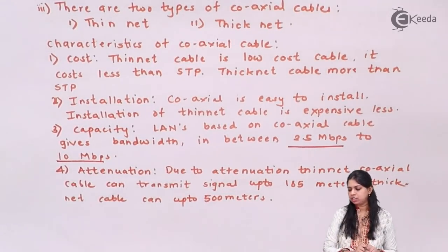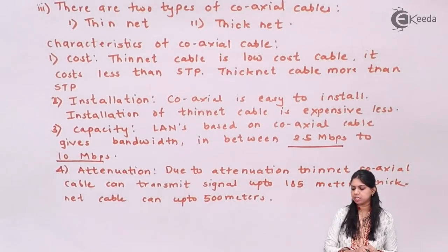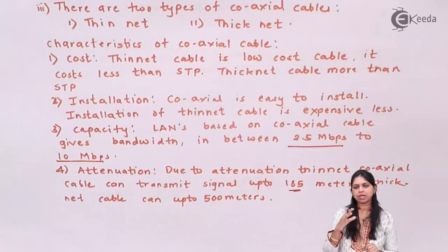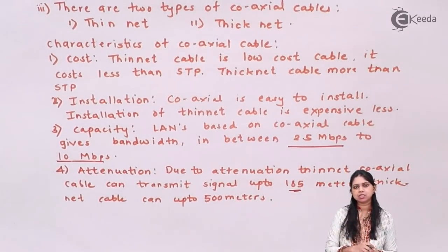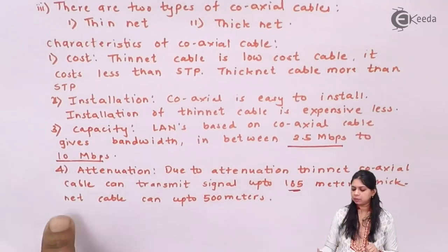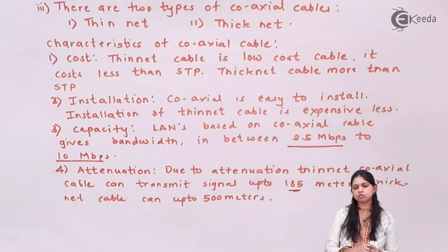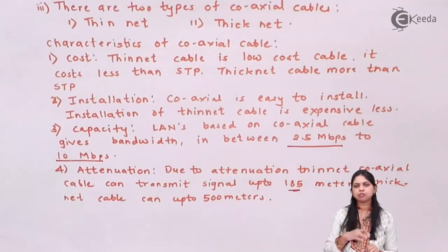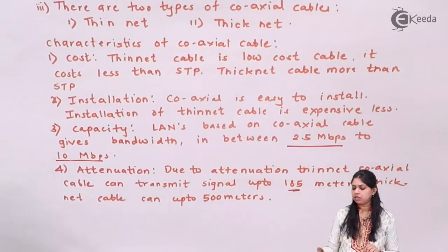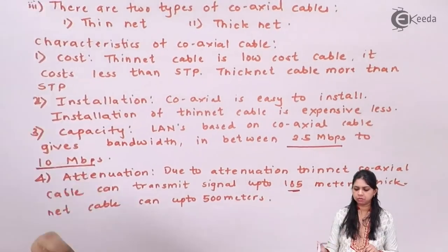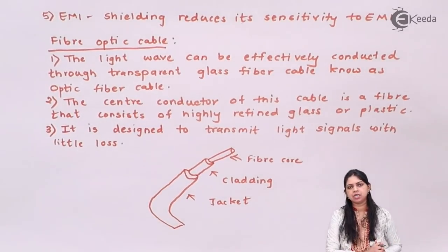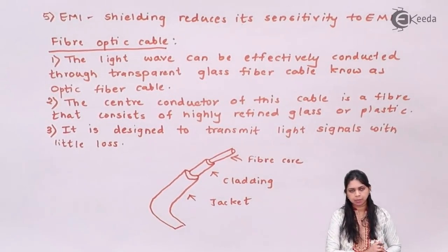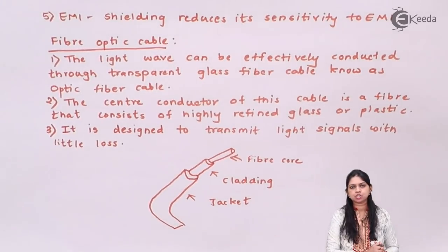Regarding attenuation, a thin net coaxial cable can transmit a signal up to 185 meters with less attenuation. Beyond 185 meters, it will suffer from attenuation. A thick net cable can run up to 500 meters, so the attenuation limit for thick net is 500 meters, whereas for thin net it is 185 meters. Regarding EMI, coaxial cable is less sensitive to EMI.